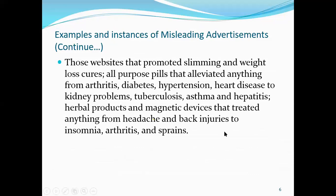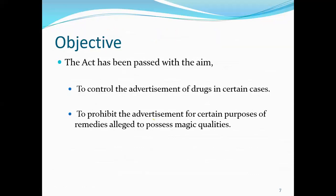The main objective of this act is to control the advertisement of drugs in certain cases and to prohibit the advertisement of remedies claimed to possess magic qualities. These two are the main objectives of this act. For a two-mark question asking 'What are the objectives of the Drug and Magic Remedies Act 1954 and Rules 1955?', you must write these two objectives to get full marks.